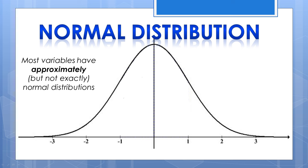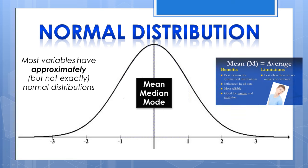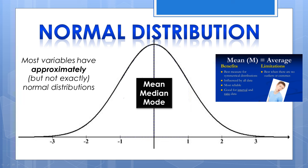In a normal distribution, measures of central tendency, including the mean, median, and mode, all fall at the same midline point. The mean, median, and mode are all equal. The calculations of these measures of central tendency are covered in another video.